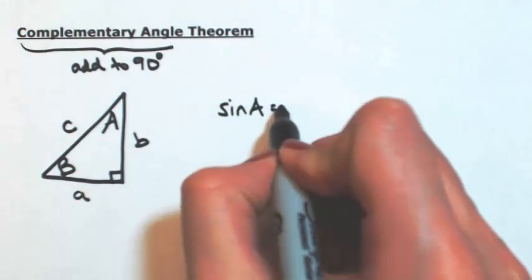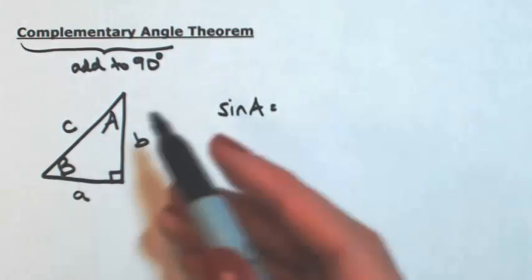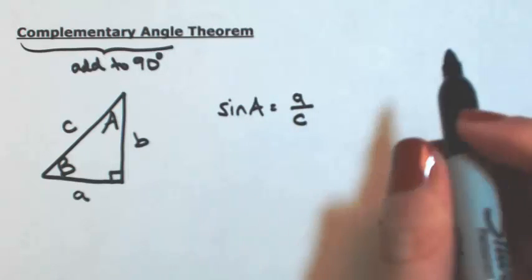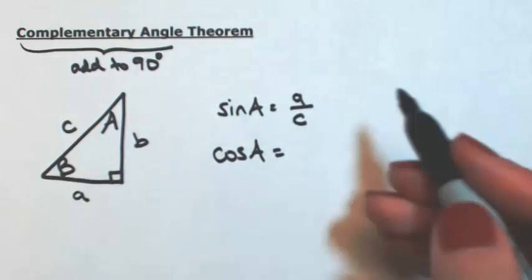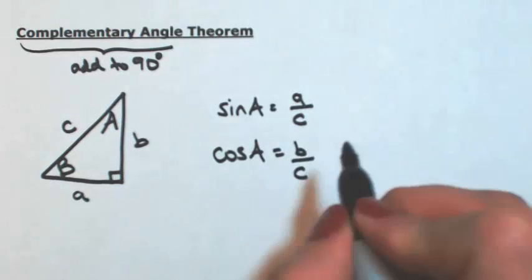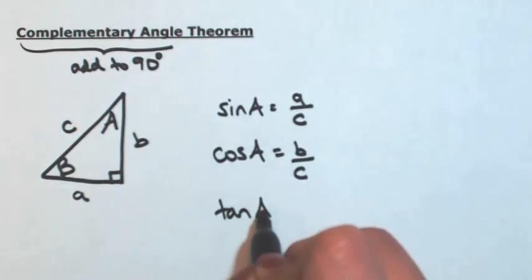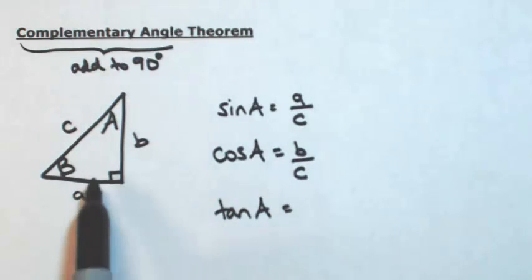So the sine of angle A, opposite over hypotenuse, so A over C. Cosine of angle A, adjacent over hypotenuse. Tangent of angle A, opposite over adjacent.